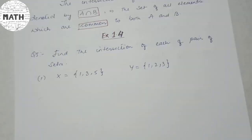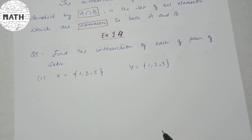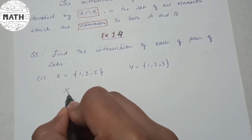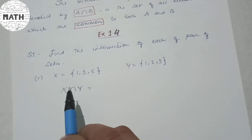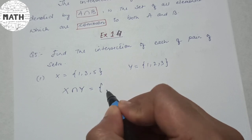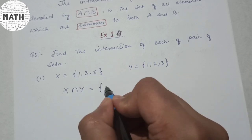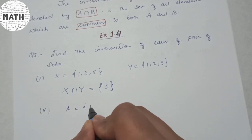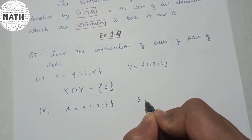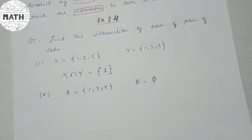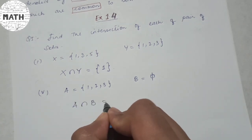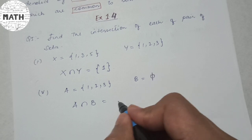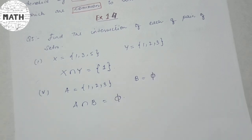Exercise 1.4, Question 5: Find the intersection of each pair of sets. For number 1, intersection means common elements between X and Y. Looking at the sets, the only common term is 1, so X intersection Y = {1}. For number 5, A = {1, 2, 3} and B is the empty set, so there are no common elements. Therefore A intersection B is the empty set.